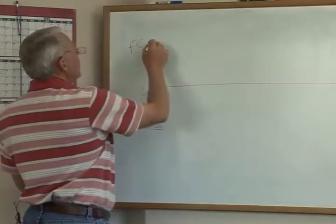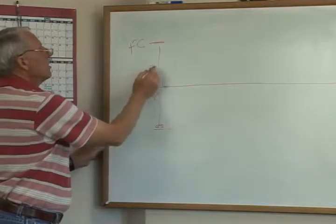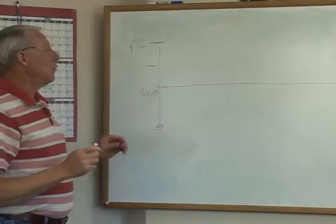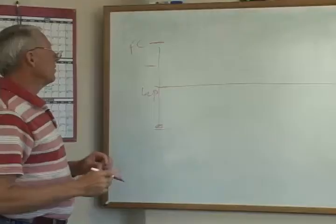Somewhere between field capacity and wilting point, our plants start becoming affected by water stress, and we don't want water stress because we want high production and good quality, as in a sweet tasting carrot, a good peach, a good potato.